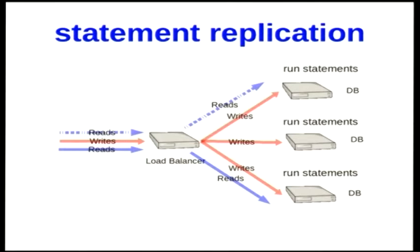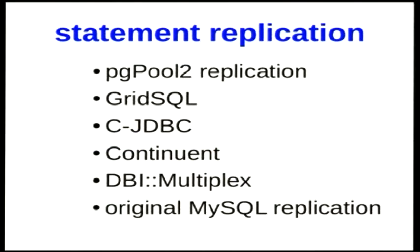For statement replication, which is the first kind of replication that every new database system starts with because it's the easiest to implement, you simply send any write statements to all nodes and then try to work out any inconsistencies between how the nodes process those write statements. Examples within the Postgres world include PGPool-2's built-in replication, GridSQL (now called Stado), and Cluster JDBC. The replication that came with MySQL version 3 was pure statement replication.